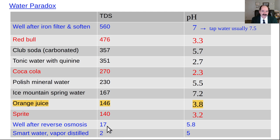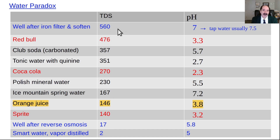After reverse osmosis, the TDS — total dissolved solids, that's the number of particles per unit of volume — dropped to 17 after reverse osmosis. So that's a dramatic reduction from 560 coming out after the iron filter and a whole house carbon filter. That's from well water down to 17 — really low in terms of particles.